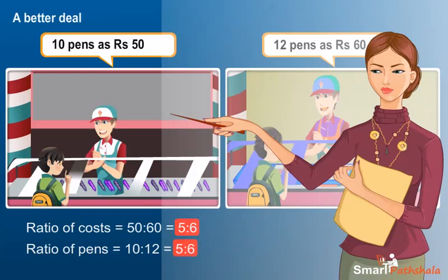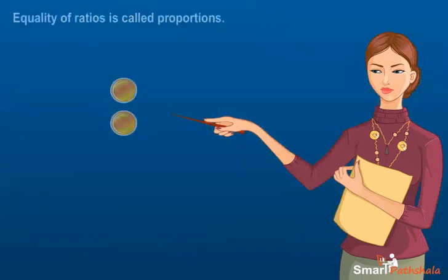Here we see that both the ratios are equal, so both the shops are offering the same deal. If two ratios are equal, we say that they are in proportion and use the symbol double colon or equal to symbol to equate the two ratios. If the two ratios are not equal, then they are not in proportion.